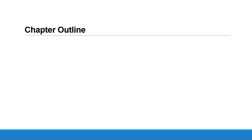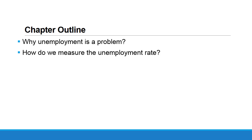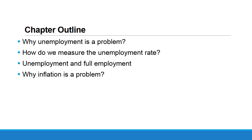We have five main points in this chapter. Firstly, why unemployment is a problem? How do we measure the unemployment rate? Unemployment and full employment. Then we turn to the other part of the chapter where we are going to tackle inflation: why inflation is a problem, and finally, how do we measure the inflation rate?